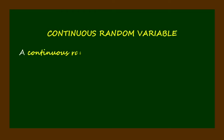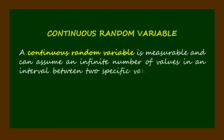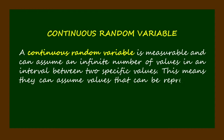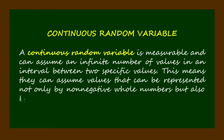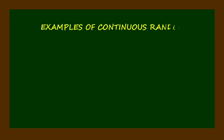A continuous random variable is measurable and can assume an infinite number of values in an interval between two specific values. This means they can assume values that can be represented not only by non-negative whole numbers, but also by fractions and decimals.